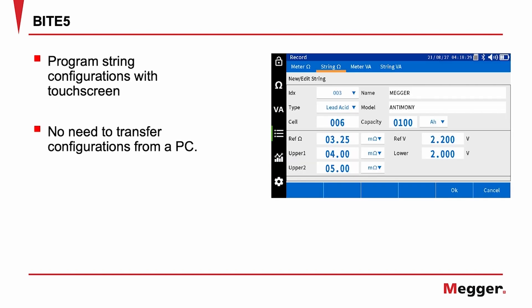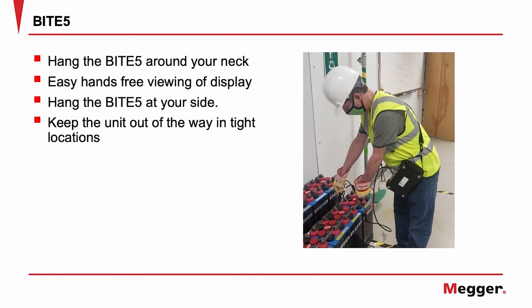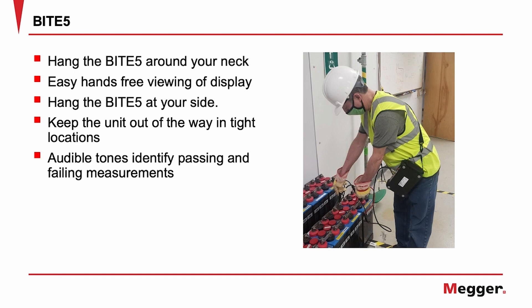Program string configurations using the touchscreen — no need to transfer configurations from a PC. Use the included neck strap and hang the Byte 5 around your neck for easy hands-free viewing of the display. You can also hang the unit around your side, which is helpful in tight locations. When used this way, you can use the audible tones that will identify passing and failing measurements.